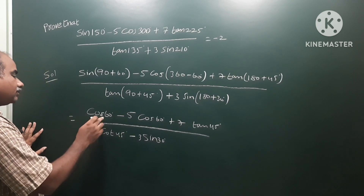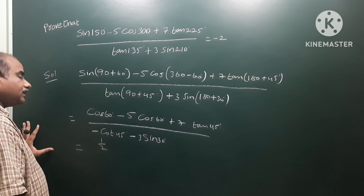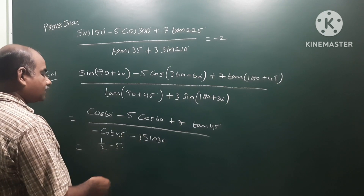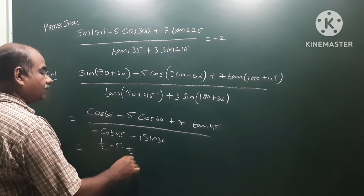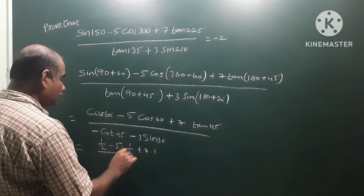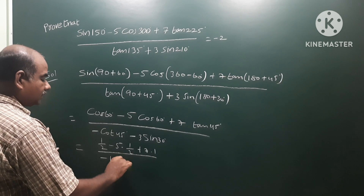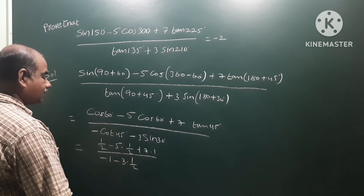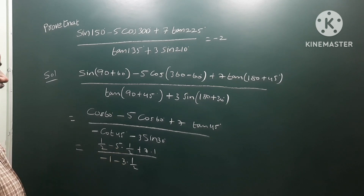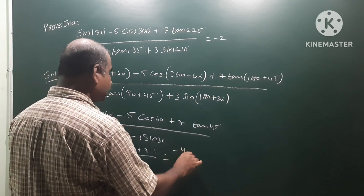Now substituting values: cos60 = 1/2, so the numerator becomes 1/2 minus 5×(1/2) plus 7×tan45 which is 1. The denominator is minus cot45 which is 1, minus 3×sin30 which is 1/2. The numerator simplifies to 1/2 minus 5/2, giving minus 4/2, plus 7.